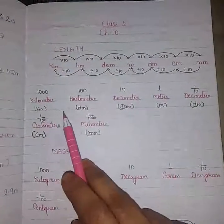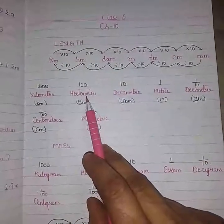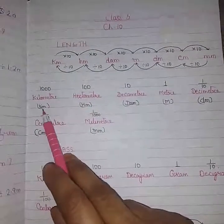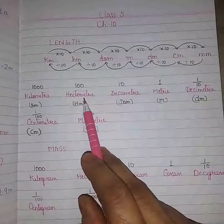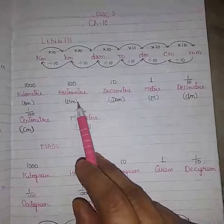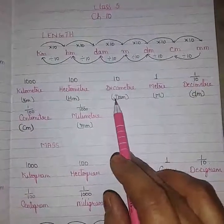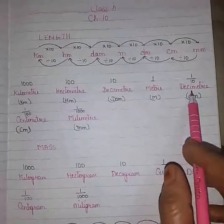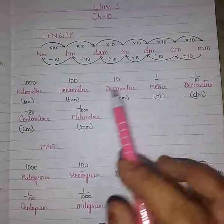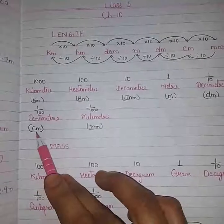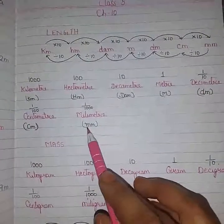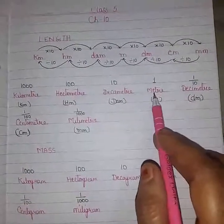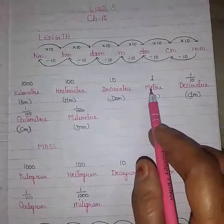These are some of the units in which length is measured. The biggest one is kilometer, represented as Km. Then hectometer, that is Hm. Then decameter, that is Dam. Then meter, represented by M. Decimeter, that is Dm. Centimeter, that is Cm, and millimeter is the smallest one, that is Mm. Out of these units, meter is the standard unit to measure length.